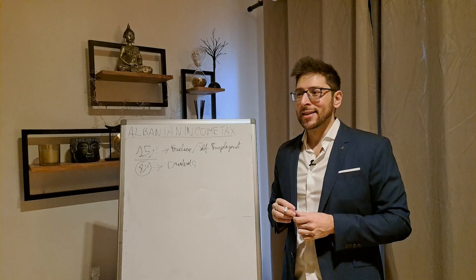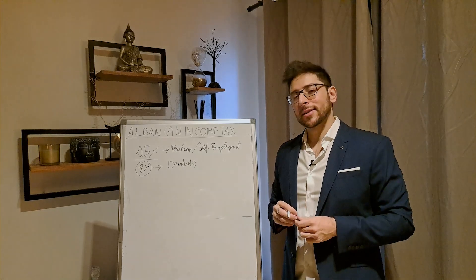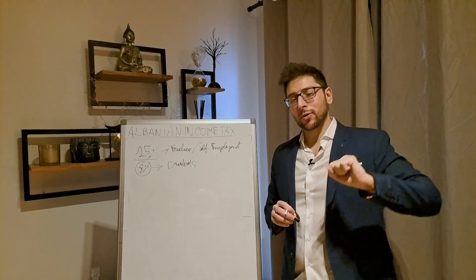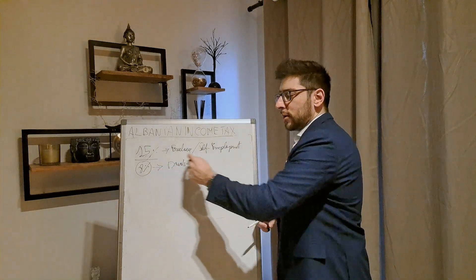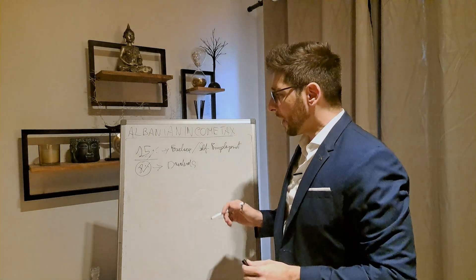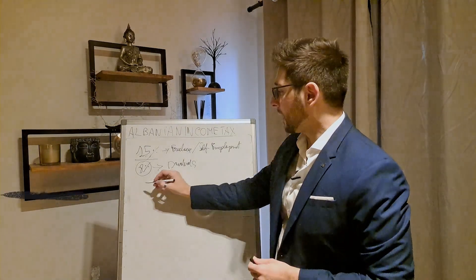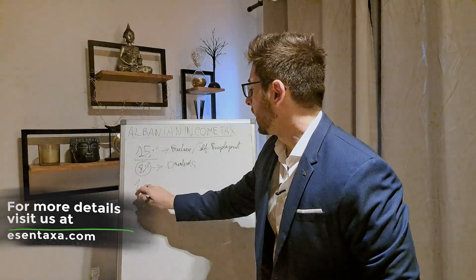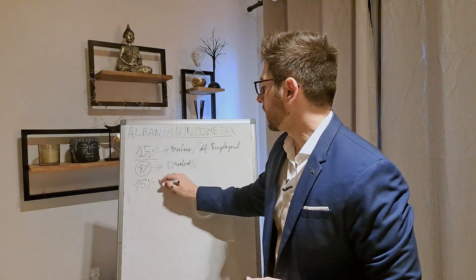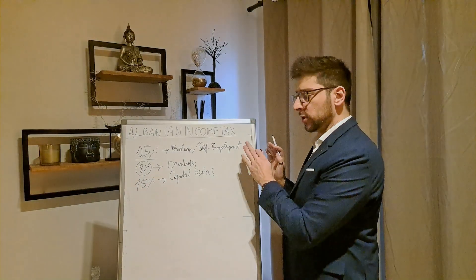If you have a company in the UK and you're living, for example, in Albania, you have to only pay this 8% tax. What about the capital gains? Capital gains tax, it's always taxed as well for individuals at 15% as well, okay? Here we are talking about individuals.